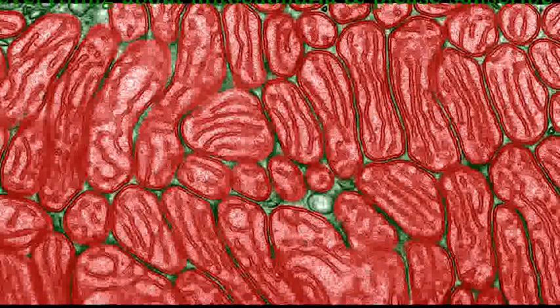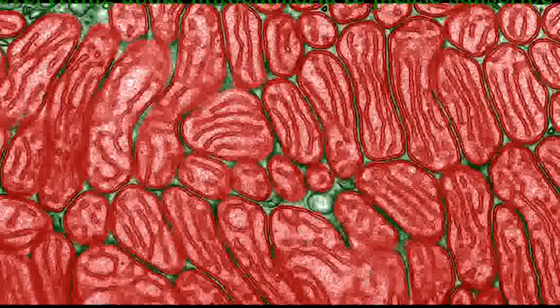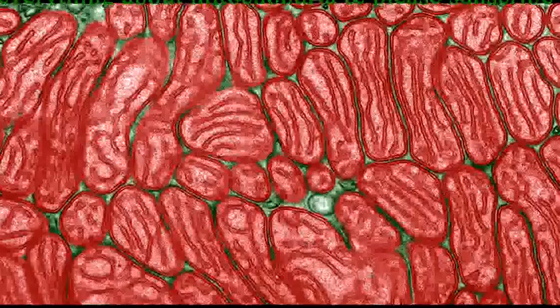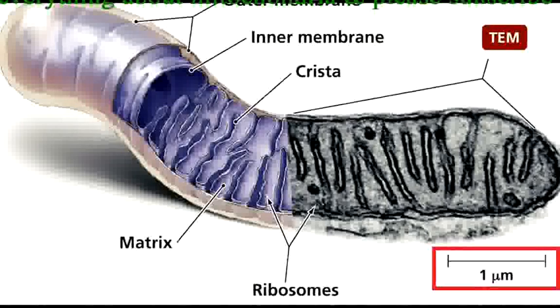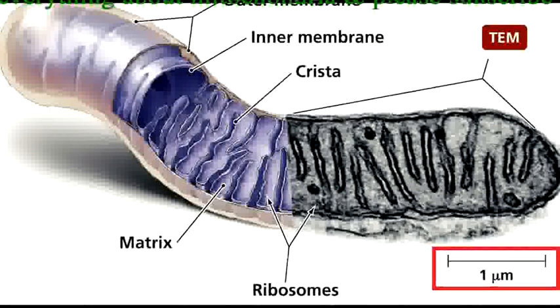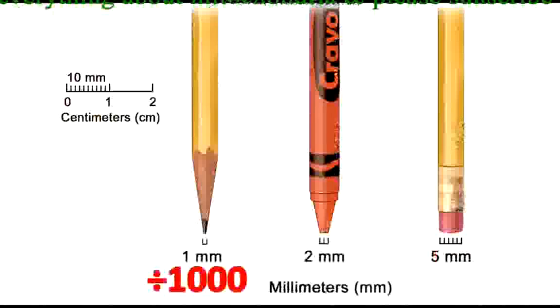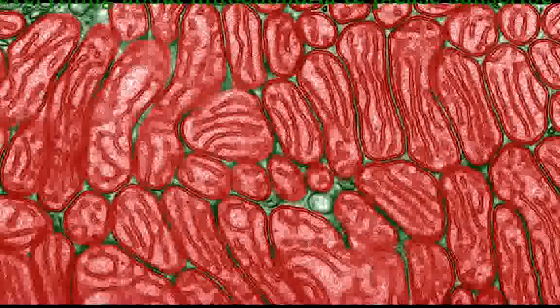This is an electron micrograph of a photoreceptor cell from a salamander. This cell has many mitochondria because it uses a lot of ATP. Let's take a closer look. Here is a single mitochondrion. Notice that the scale is set to 1 micrometer — that's 1 times 10 to the negative 6 meters, or 1/1,000th of a millimeter. That gives you an idea of how tiny mitochondria are, and how so many can fit into one cell.